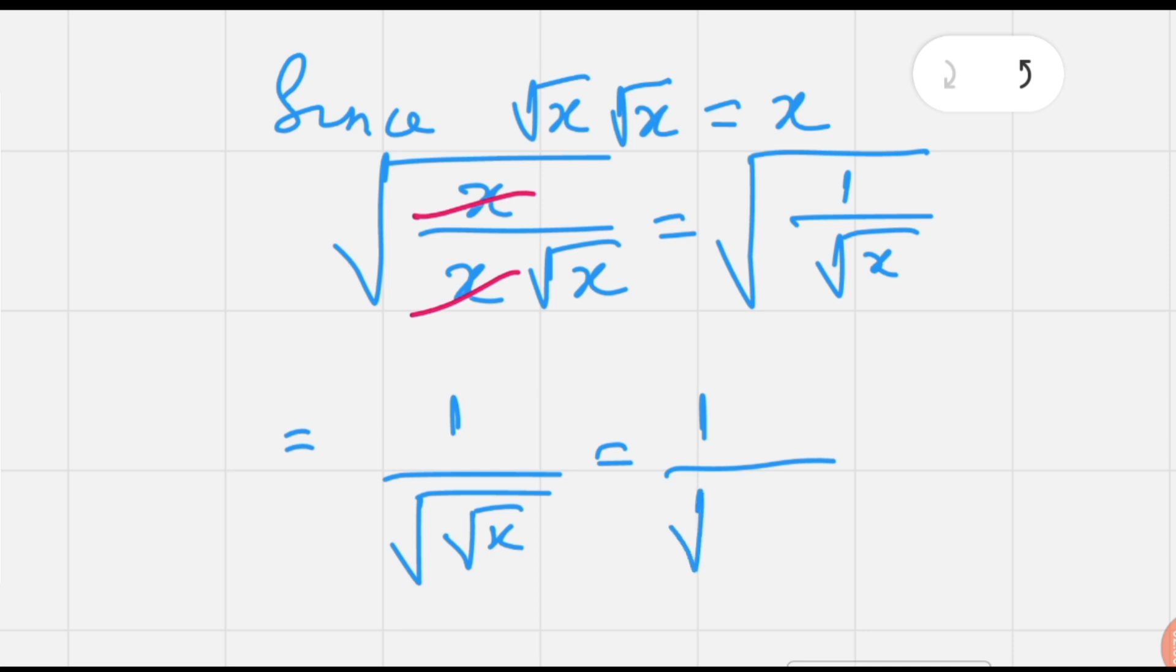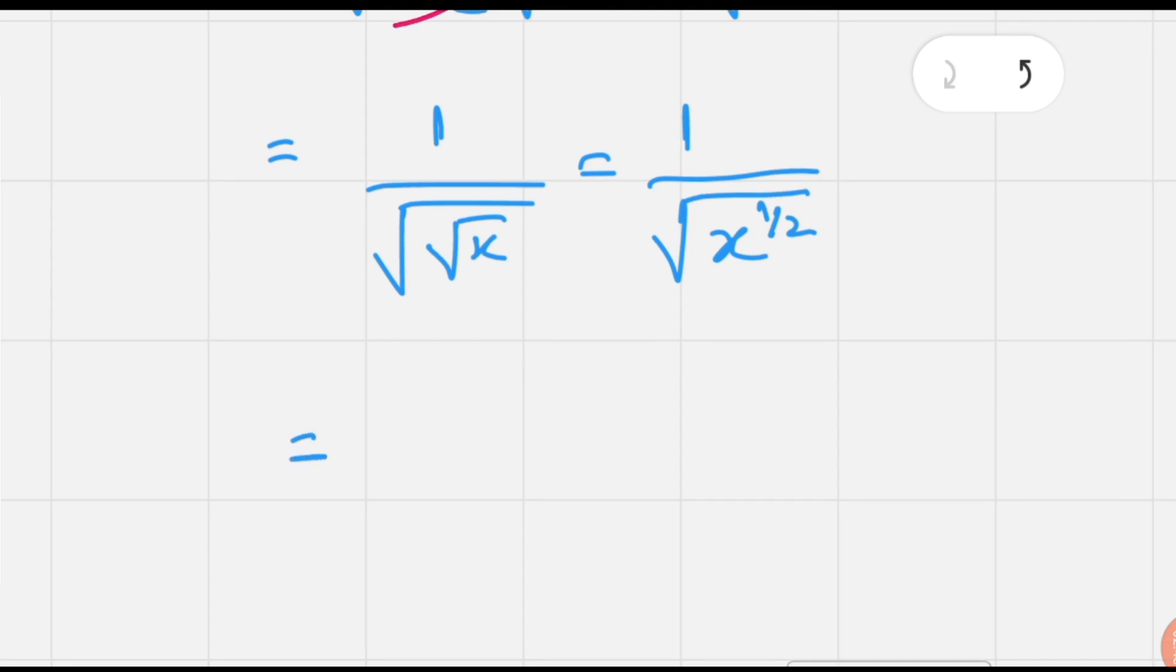So we have one over under the root x to the exponent one by two. Again removing the radical and replacing power of radical over x.